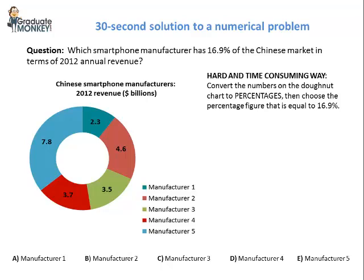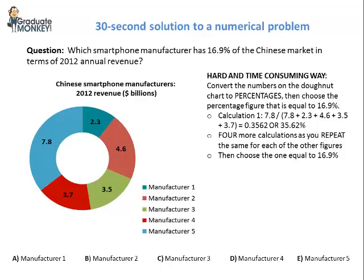It seems that they are asking you to convert each revenue amount to a percentage figure until you find the one that is equal to 16.9%. If we start with manufacturer 5, then we take 7.8 and divide it by the sum of all five figures — 7.8 divided by (7.8 + 3.7 + 3.5 + 4.6 + 2.3). The result is 0.3562 or 35.62%, which is a lot higher than 16.9%. So we have to continue the process until we find the 16.9 figure.